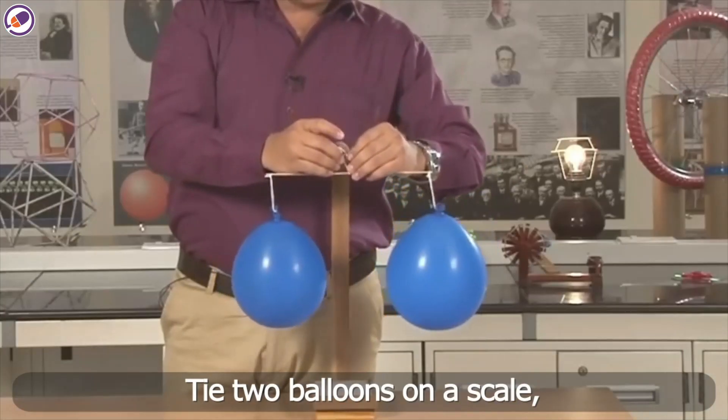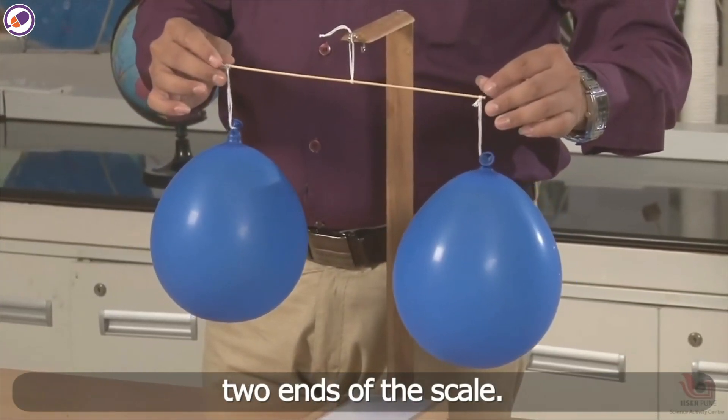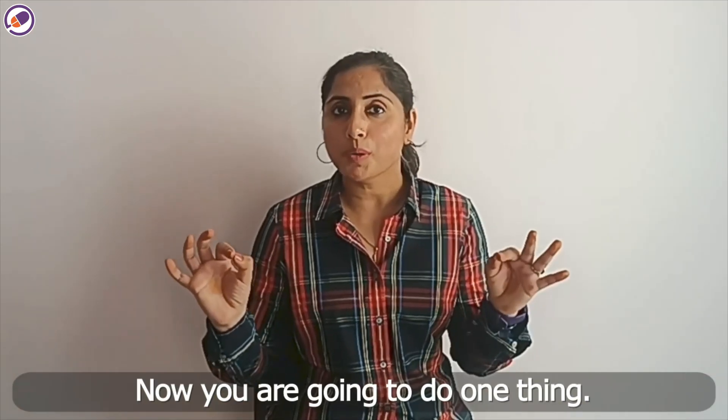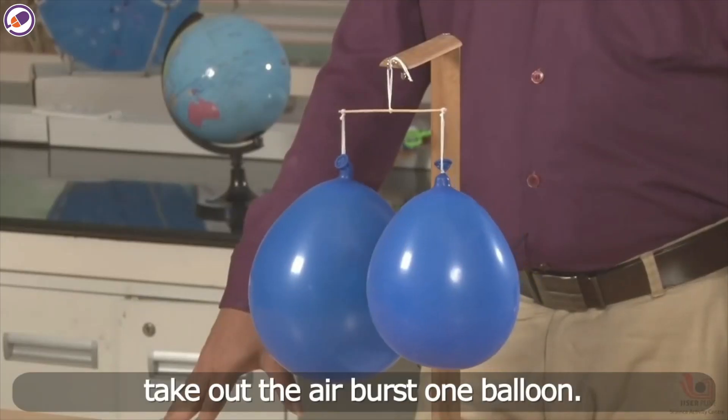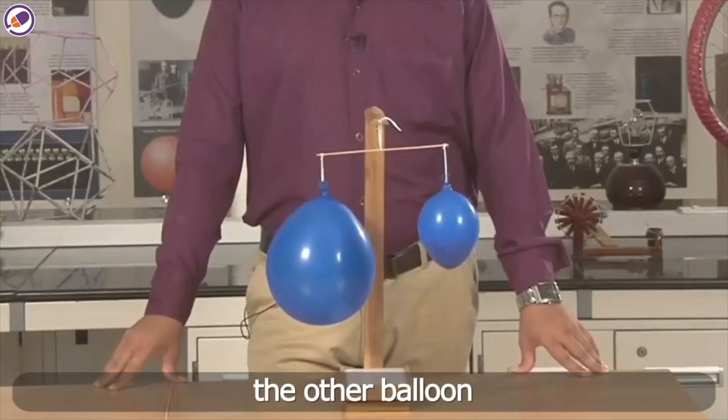Tie two balloons on a scale, two ends of the scale, two blown up balloons. Now you are going to do one thing: you are going to take out the air, burst one balloon. You will see automatically the other balloon with the air is going to come down.